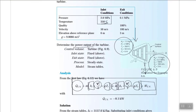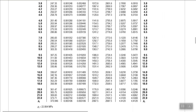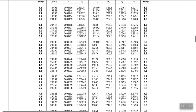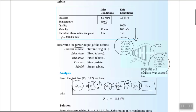For the inlet enthalpy, the conditions are 2 MPa and 350°C. Checking the steam table, the saturation temperature at 2 MPa is 212.38°C. Since 350°C is higher than that, the steam is in the superheated region.